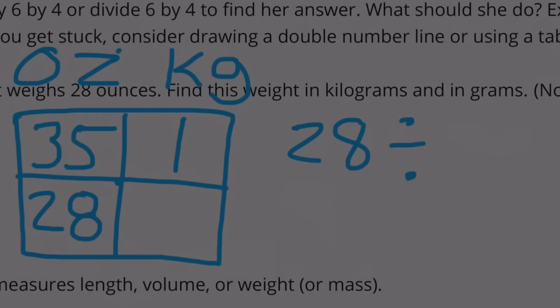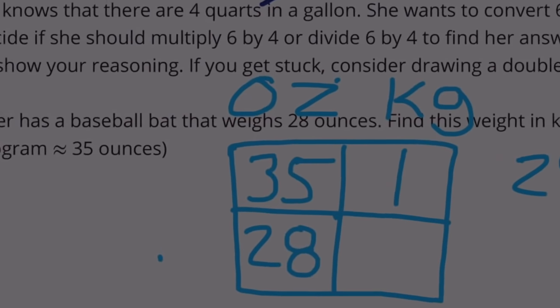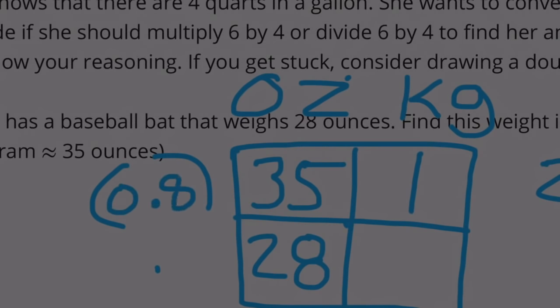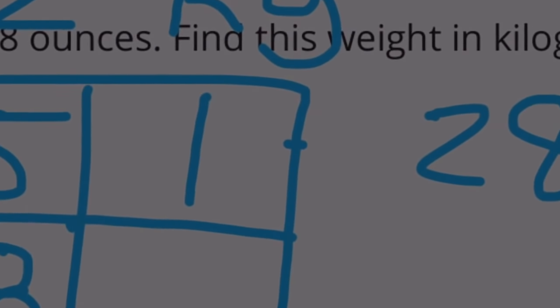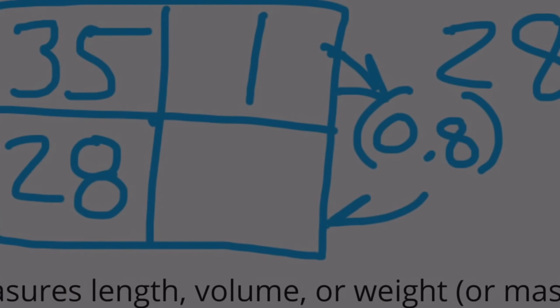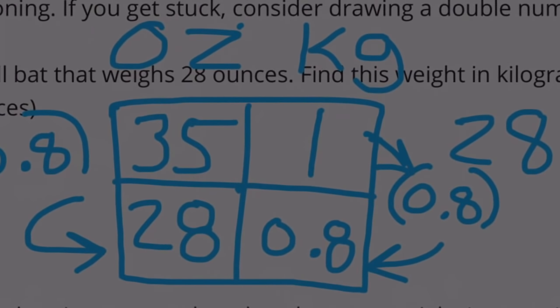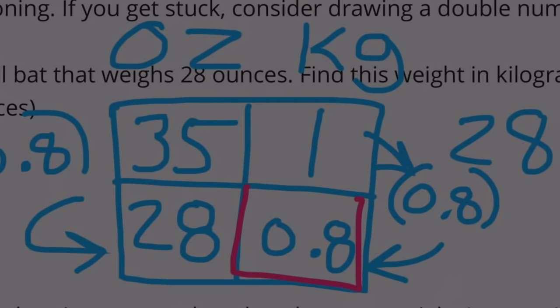His bat weighs 28 ounces. 28 divided by 35 equals 8 tenths. So we multiplied 35 times 8 tenths to get 28. So we need to multiply 1 by 8 tenths. And 1 times 8 tenths would get us 8 tenths. So his bat weighs 8 tenths of a kilogram.